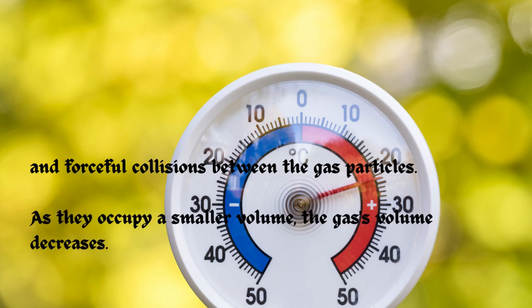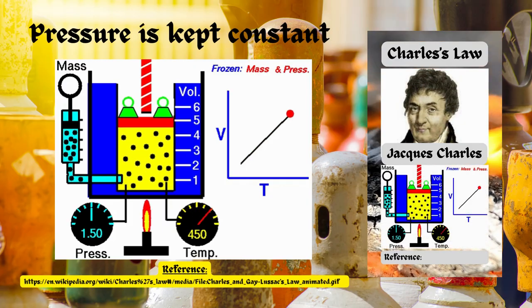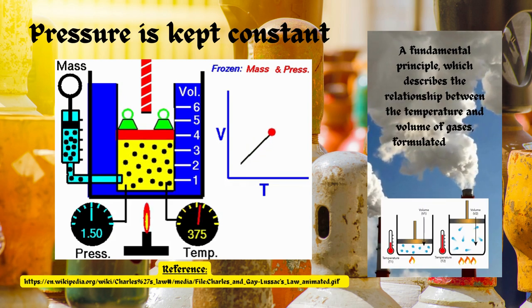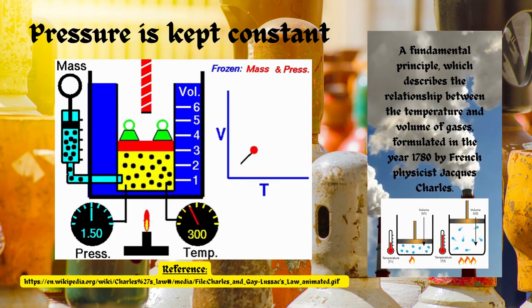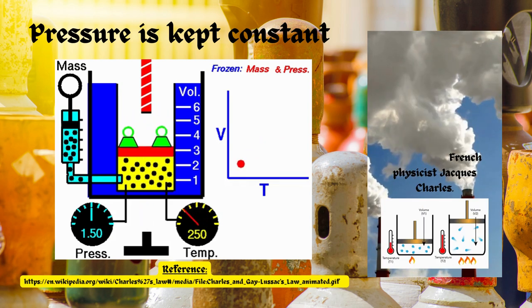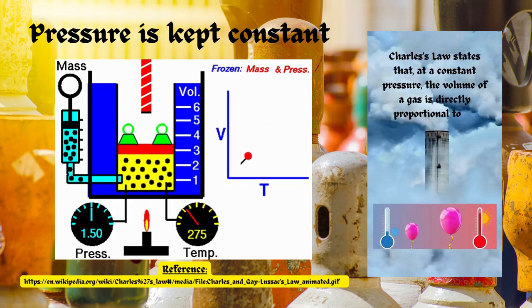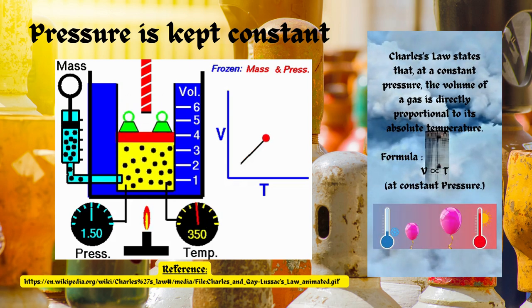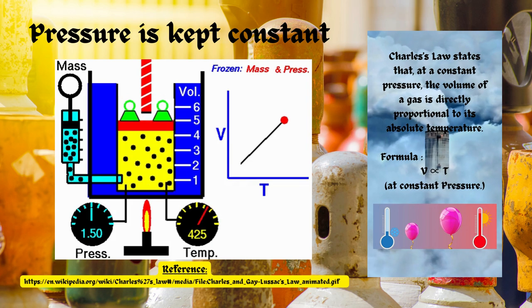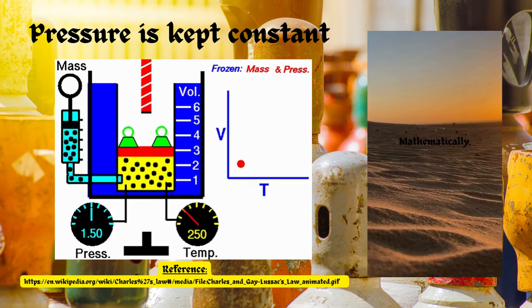In Charles's law, pressure is kept constant. Charles's law, a fundamental principle which describes the relationship between the temperature and volume of gases, was formulated in the year 1780 by French physicist Jacques Charles. This law states that at a constant pressure, the volume of a gas is directly proportional to its absolute temperature.